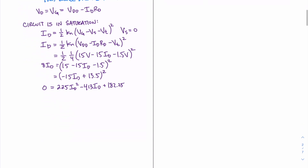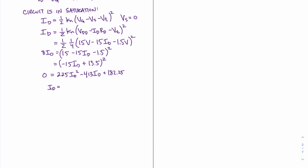Using a solver, we can find two different values for ID. The first value is 0.74 milliamps and the second value is 1.1 milliamps. Knowing that our drain resistor is 15 kilohms and we have a 15 volt supply, multiplying 15 kilohms by 1.1 milliamps would obviously be larger than 15 volts. Therefore, we can conclude that the correct current is 0.74 milliamps.